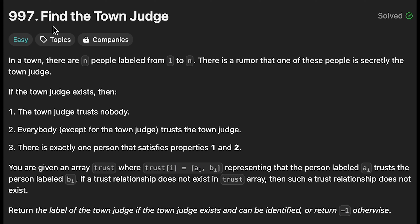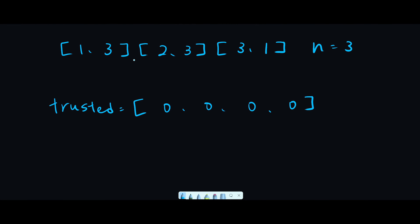Hey everyone, today we are going to solve the LeetCode question 'Find the Town Judge'. So let me explain with this example where n equals three. There are two conditions: the first condition is the town judge trusts nobody, and the second condition is everybody except the town judge trusts the town judge. I think it's a good idea to count the trusted number for each person.